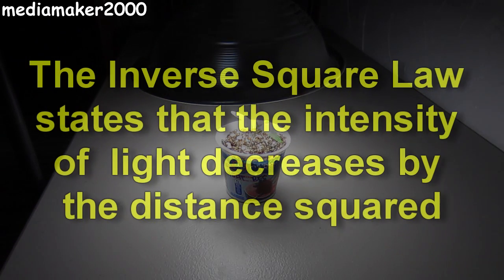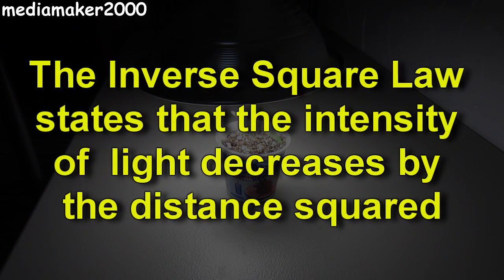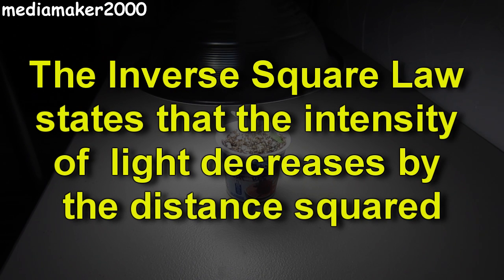The inverse square law states that the intensity of light decreases by the distance squared. Our reference is going to be the light almost touching the plant — or touching the plant, if you prefer or if you're that brave.